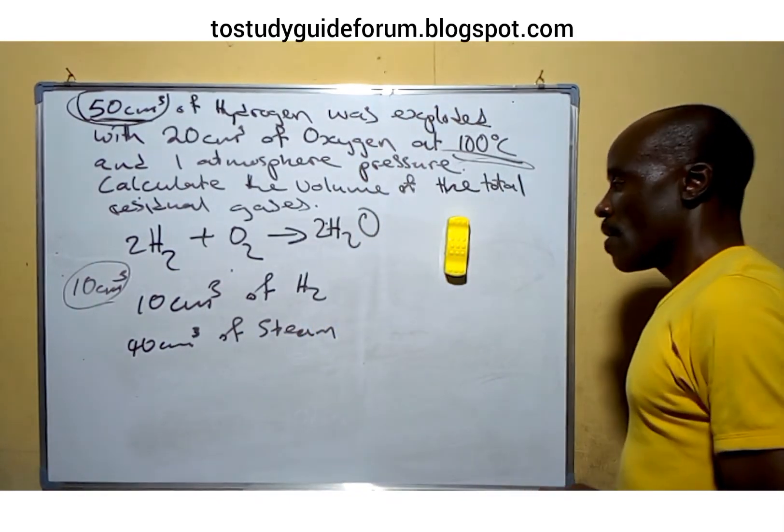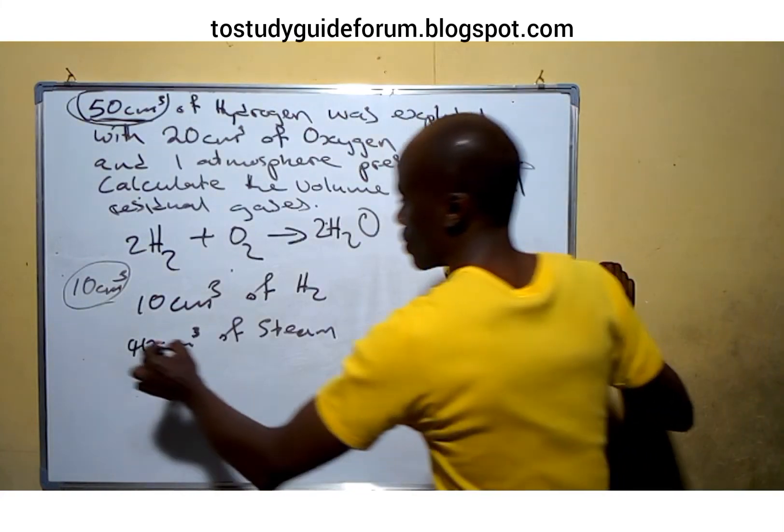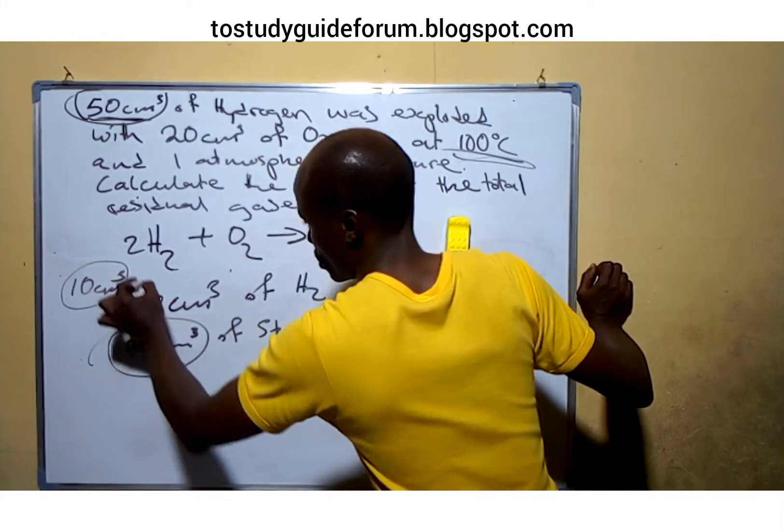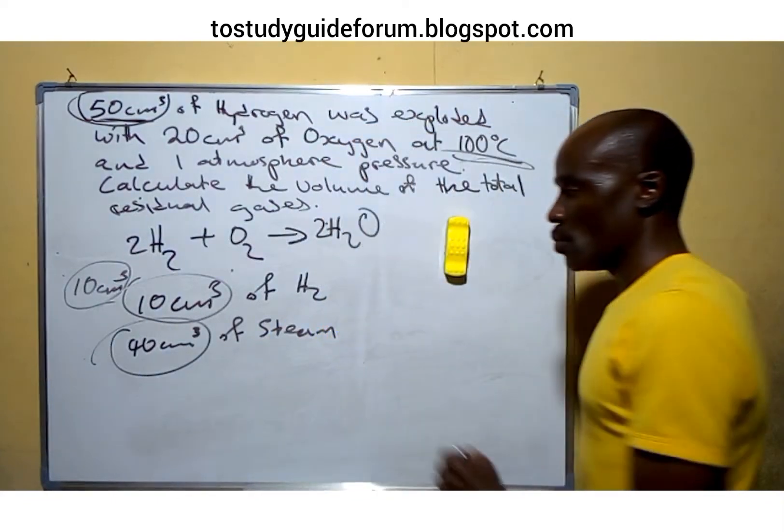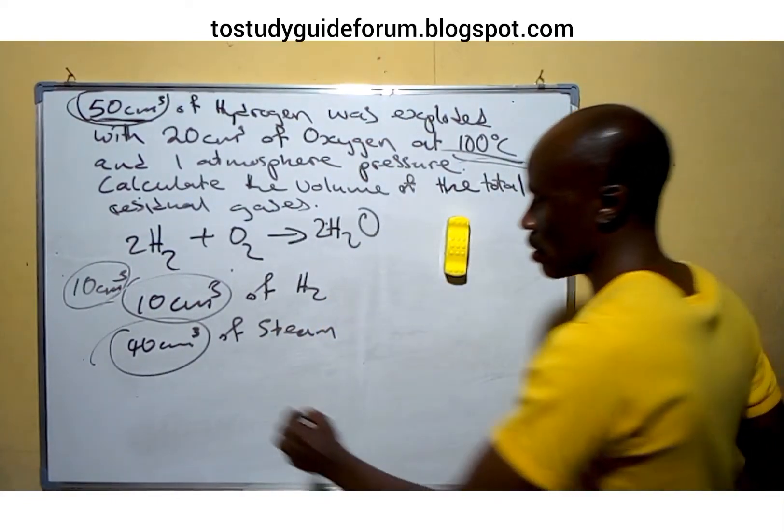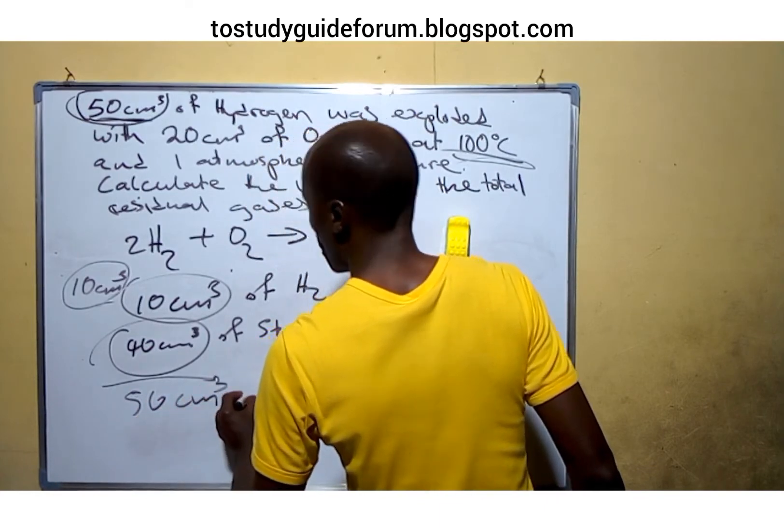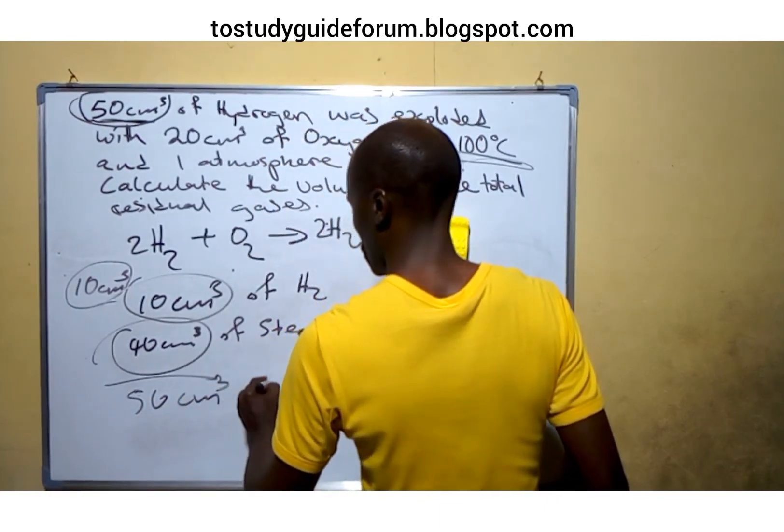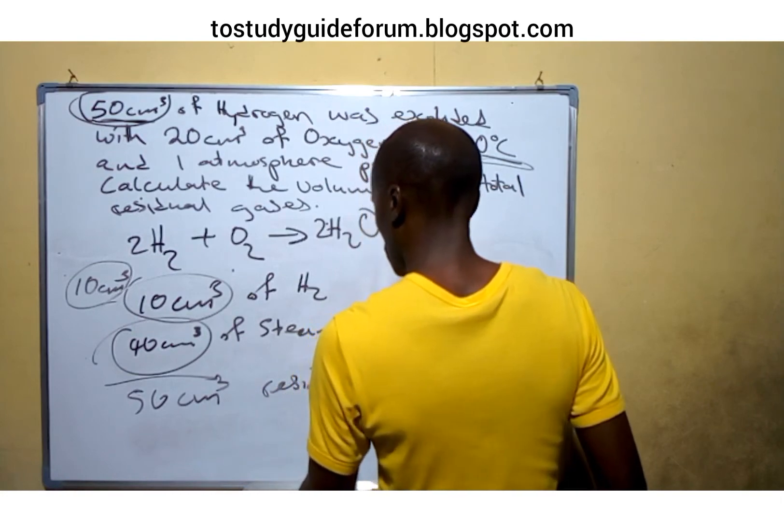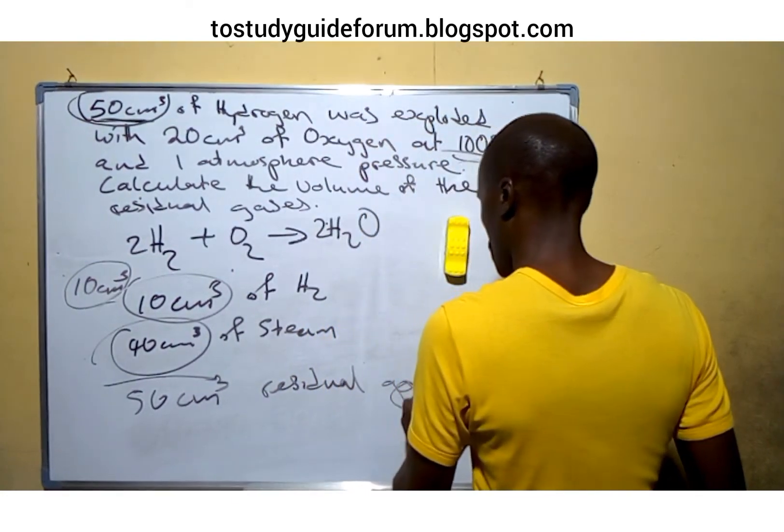That means the total residual gas, that is the steam produced and unused hydrogen, so we add it all together. We have 50 cm³ of residual gases.